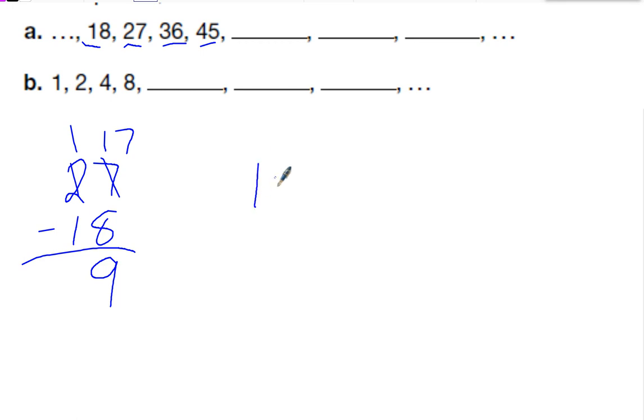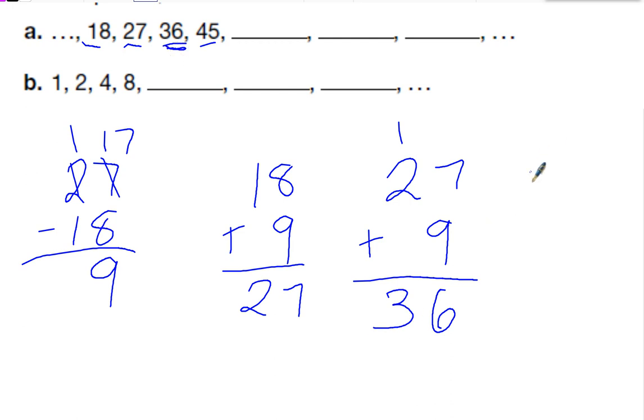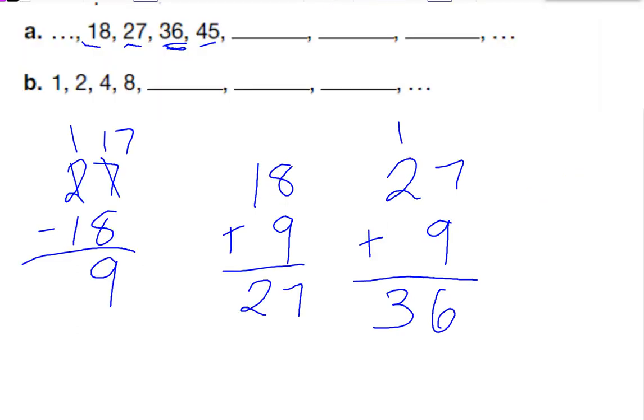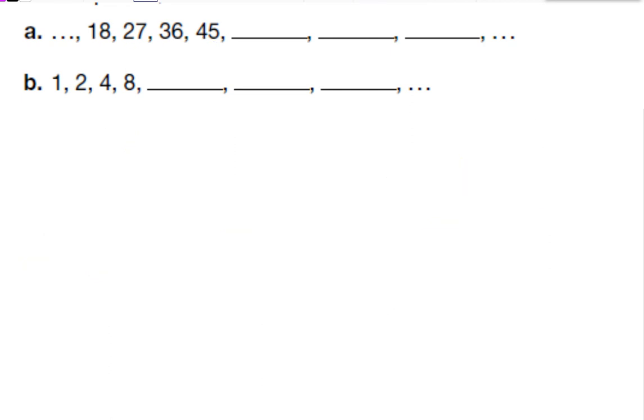So 18 plus 9 is 27. 27 plus 9. So 7 plus 9 is 16. Carry my 1. 1 plus 2 is 3. 36. That's the next term. And then 45, let's see. Then we would do 36 plus 9 and see if we got 45, which we did. So the rule for this sequence is to add 9.